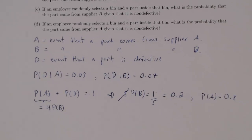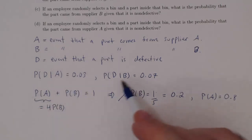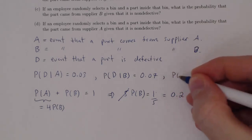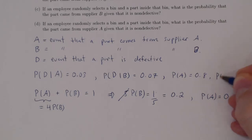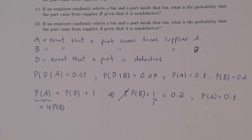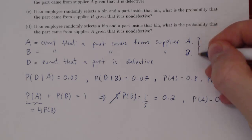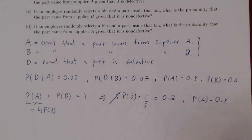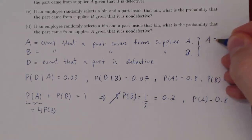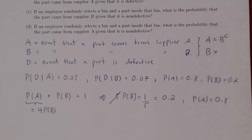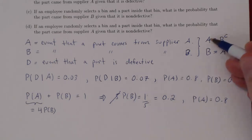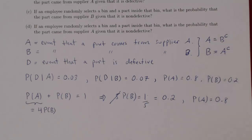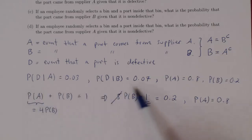Now we can summarize what we have: P(D|A) = 0.03, P(D|B) = 0.07, P(A) = 0.8, and P(B) = 0.2. One last observation: if a part does not come from Supplier A, it must come from Supplier B, and vice versa. So A is the complement of B and B is the complement of A. We have now translated everything using proper probability notation.